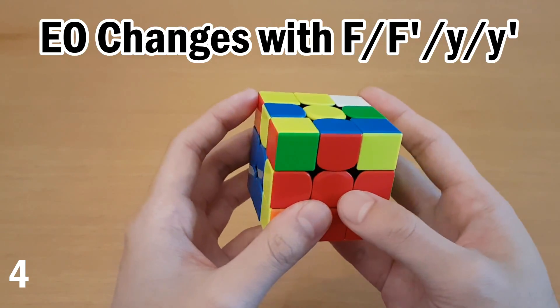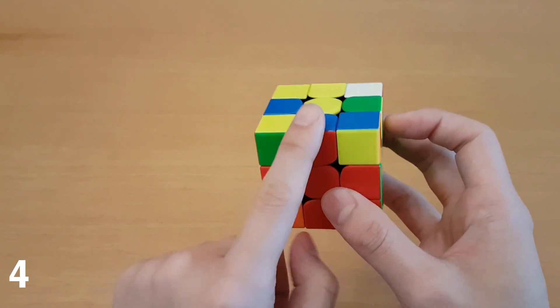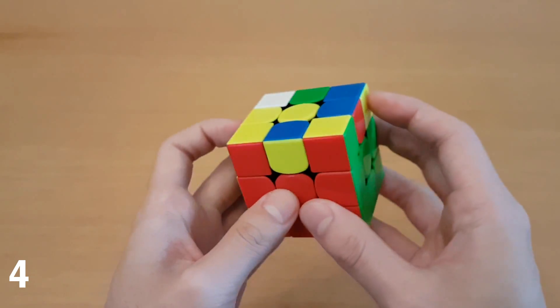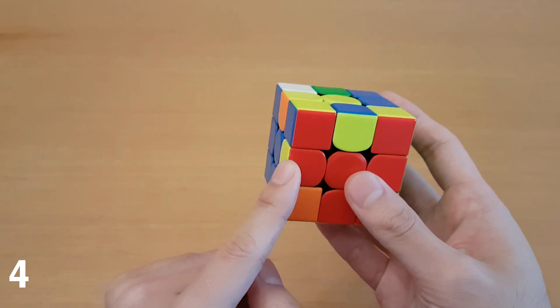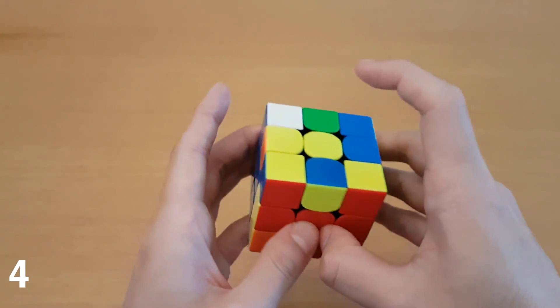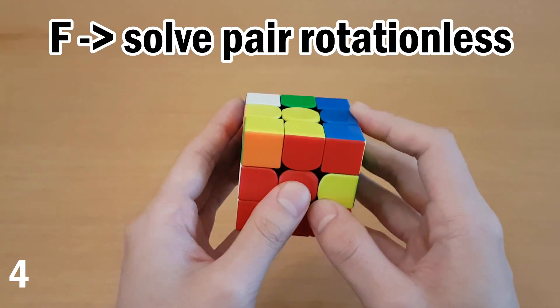So how edge orientation is changed is usually by doing F moves or of course cube rotations. But in this case we don't need to change the orientation of the edge to solve it. We keep the edge out of the F layer and we instead change the orientation of the spot it needs to go into. So I can have this edge in any of these three spots and do the F move and I'll have this solvable rotationless.